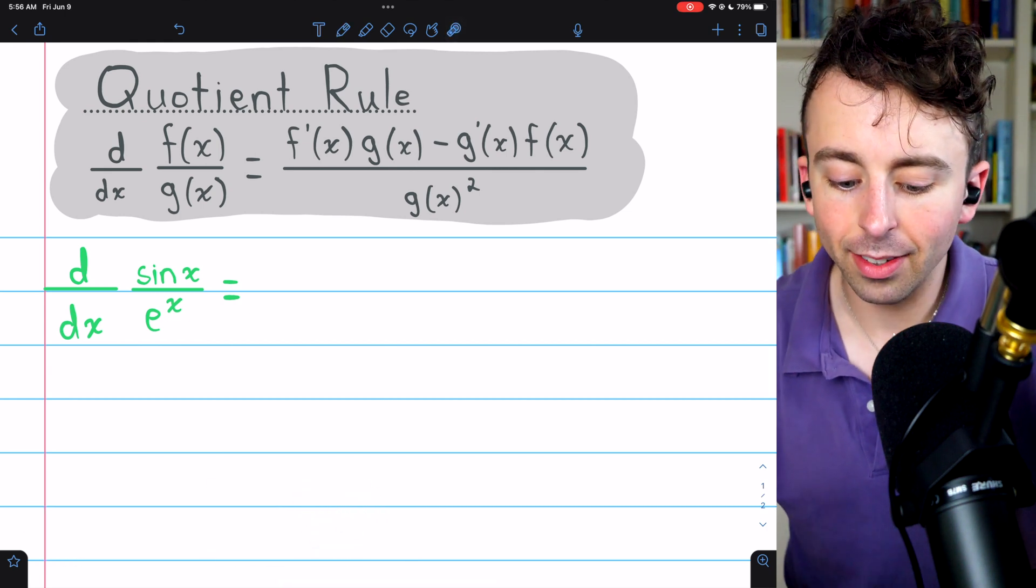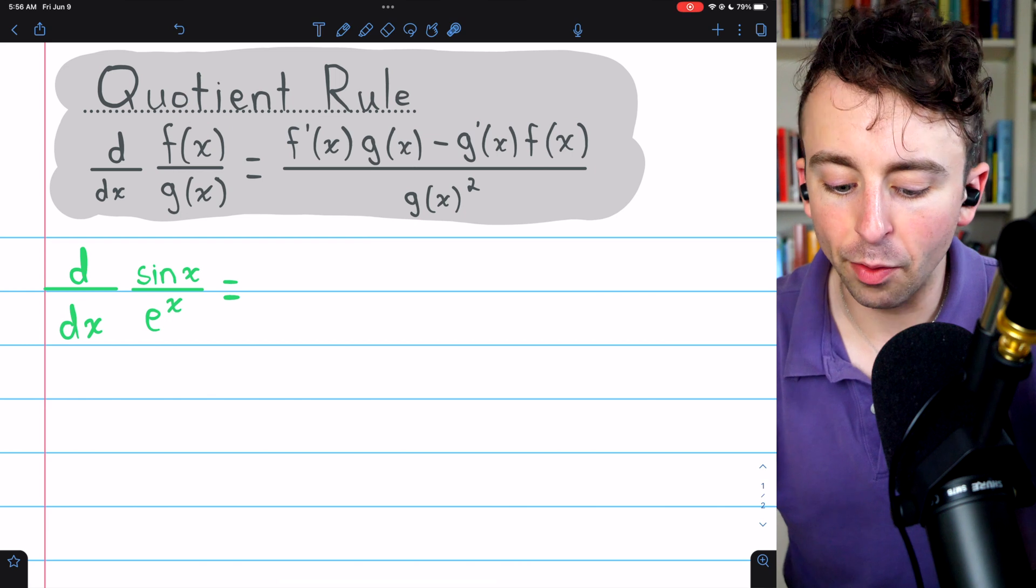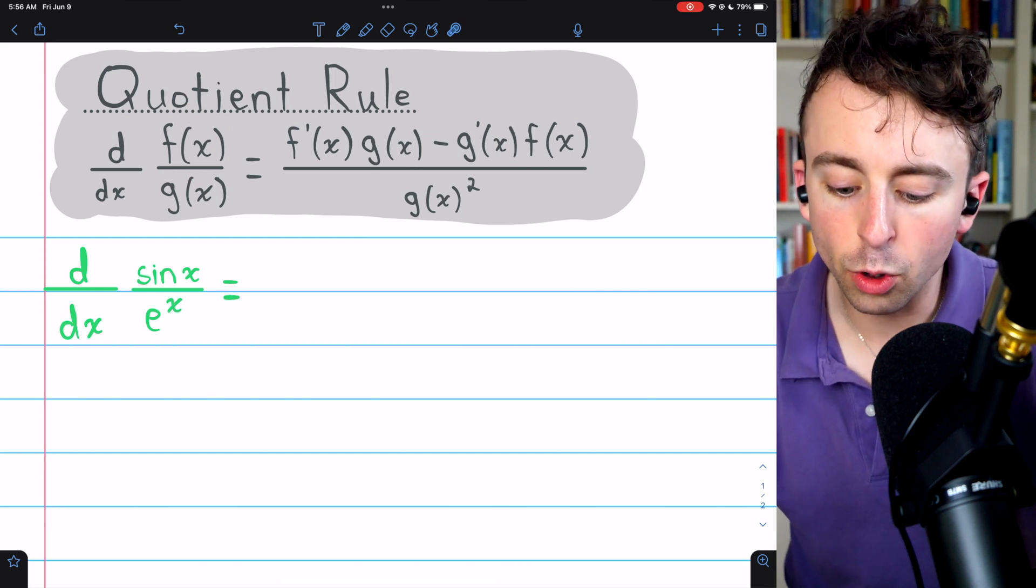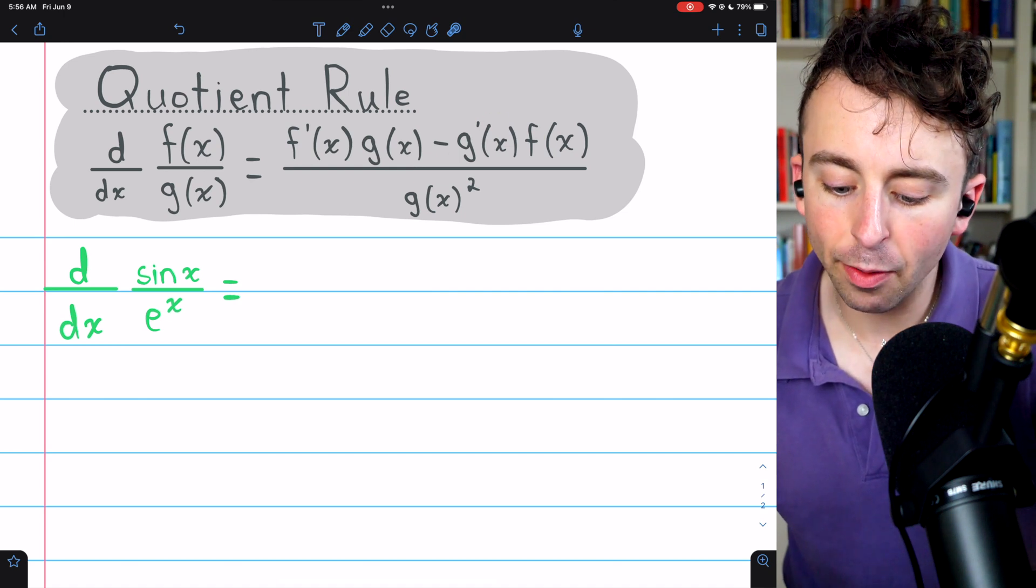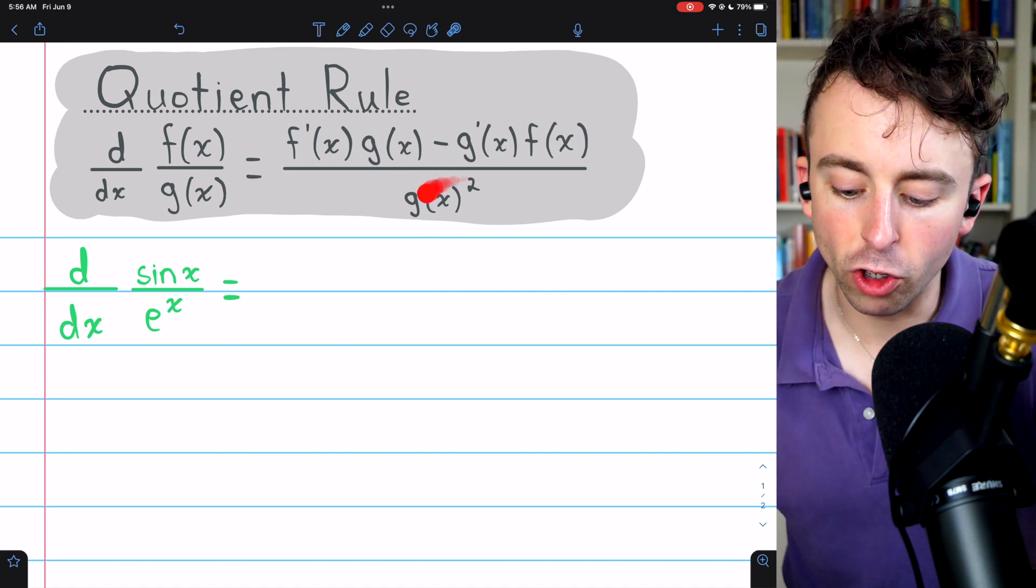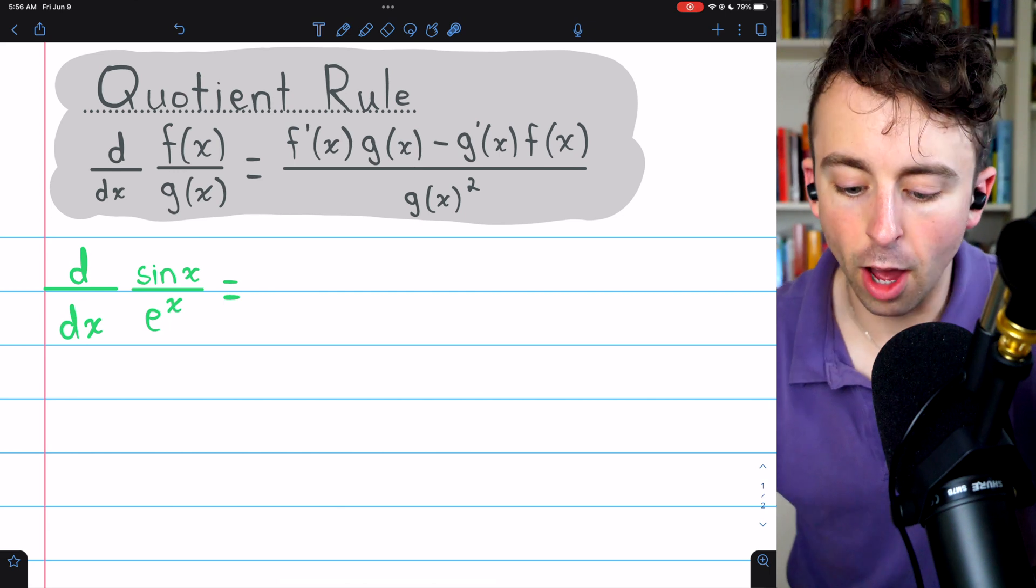The quotient rule tells us that the derivative of a function f of x divided by g of x is equal to f prime times g minus g prime times f, all divided by g squared, the square of that denominator function.